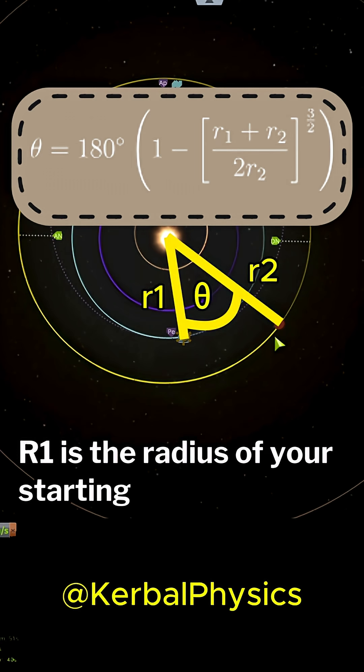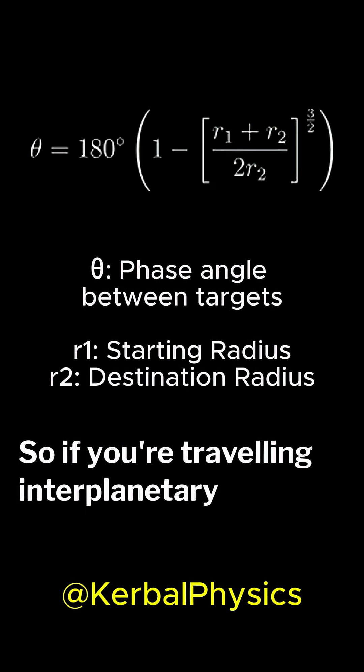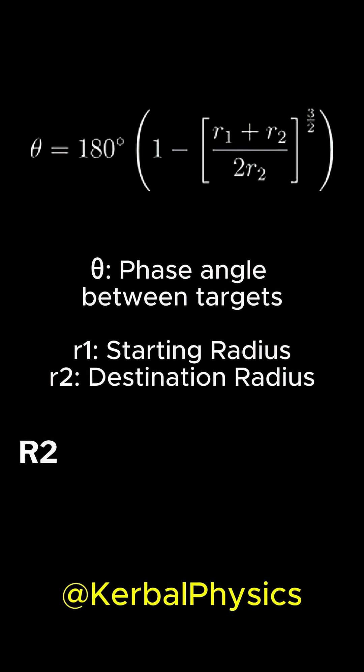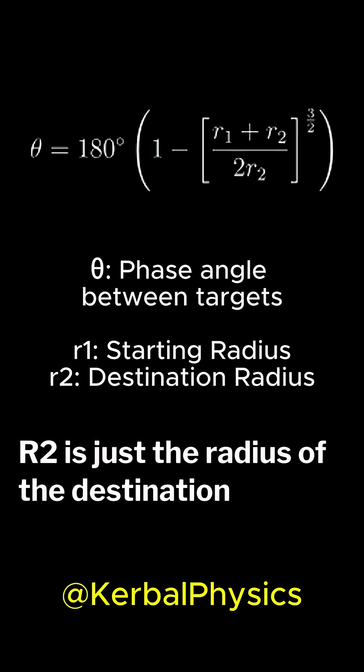R1 is the radius of your starting orbit. So if you're traveling interplanetary, this is just the orbit of the planet you are setting off from. R2 is just the radius of the destination orbit.